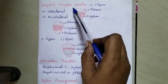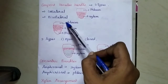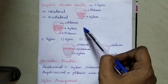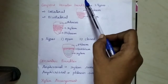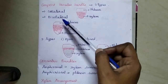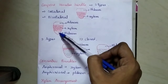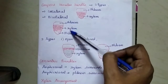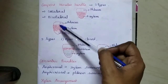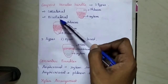The conjoined vascular bundle is of two types: one is collateral and another one is bicollateral. In collateral, xylem lies towards the center and phloem lies towards the outside. In bicollateral, xylem is present on the inner side and phloem is present on the outer side. 'Bi' means two, so the xylem is covered by phloem on both sides. This type of arrangement is known as bicollateral.